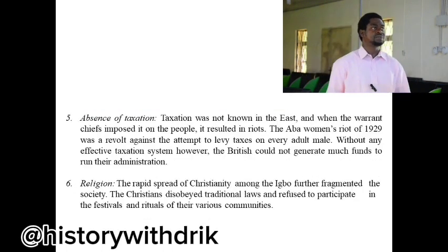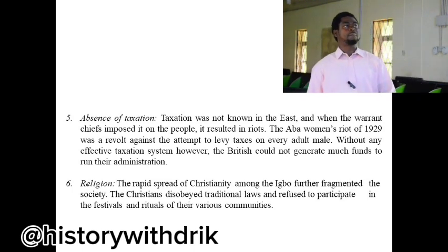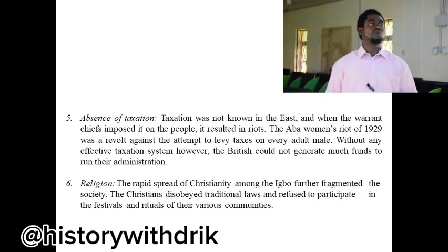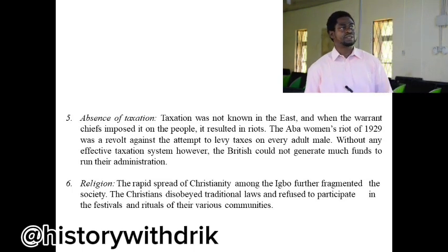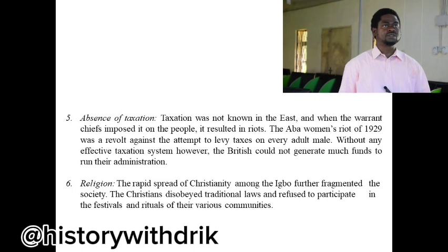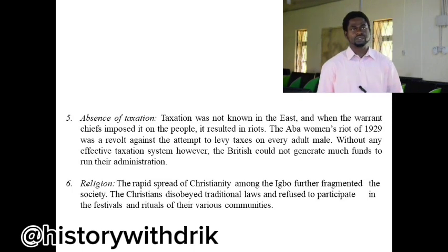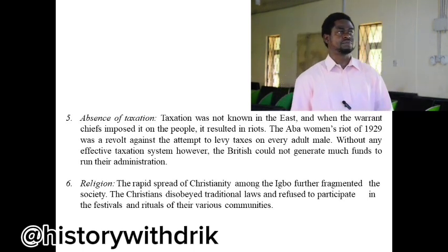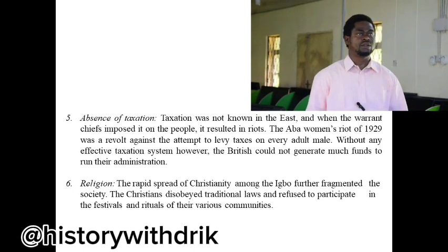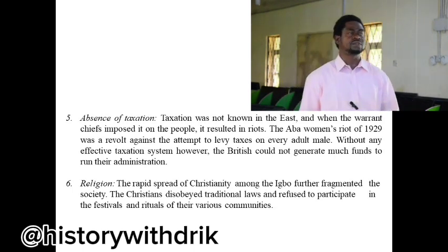Point number five was the absence of taxation. Taxation was not known in the East, and when the warrant chiefs imposed it on the people, it resulted in riots. The Aba Women's Riot of 1929 was a revolt against the attempt to levy taxes on every adult male. Without any effective taxation system, the British could not generate much funds to run the administration. Point number six was religion — the rapid spread of Christianity among the Igbo further fragmented the society, as Christians disobeyed traditional laws and refused to participate in festivals and rituals.